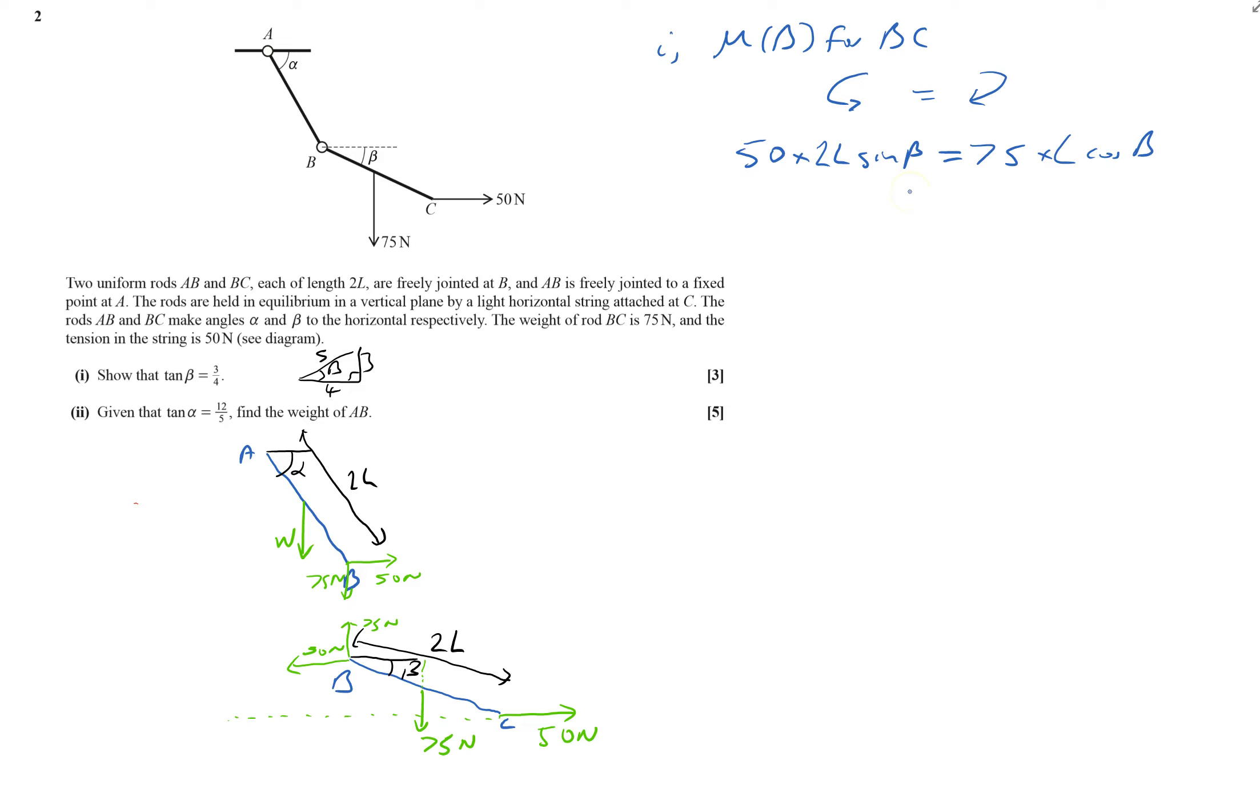And we know what's, I'm going to find out what tan beta is. So it's obviously going to divide through by cos at some stage. The L's are going to cancel out. And I'm going to get, that's 100 sin beta equals 75 cos beta. Divide both sides by cos beta will give me tan beta. Divide both sides by 100 will give 75 over 100, which is 3 quarters. So that's done the first bit.